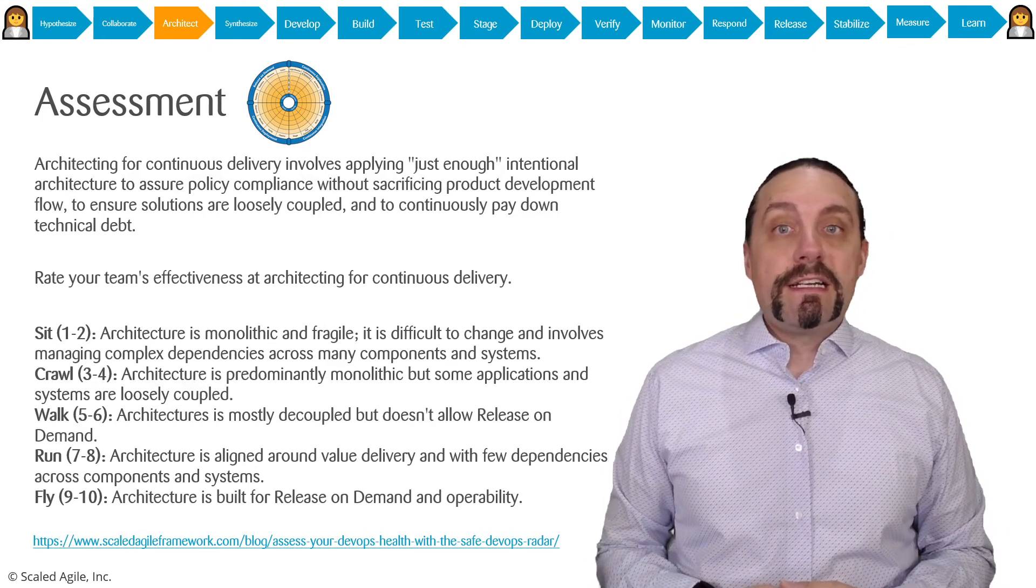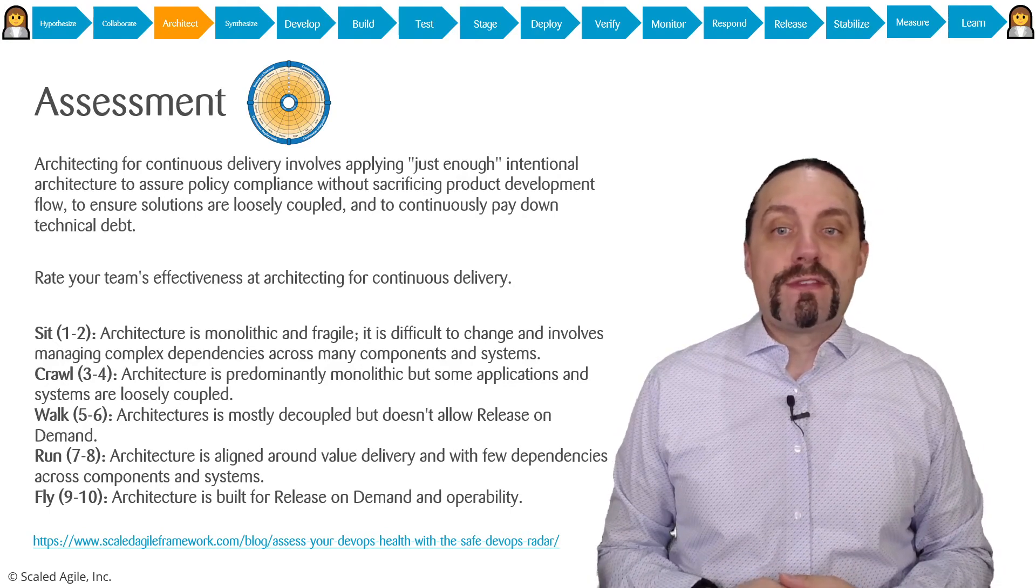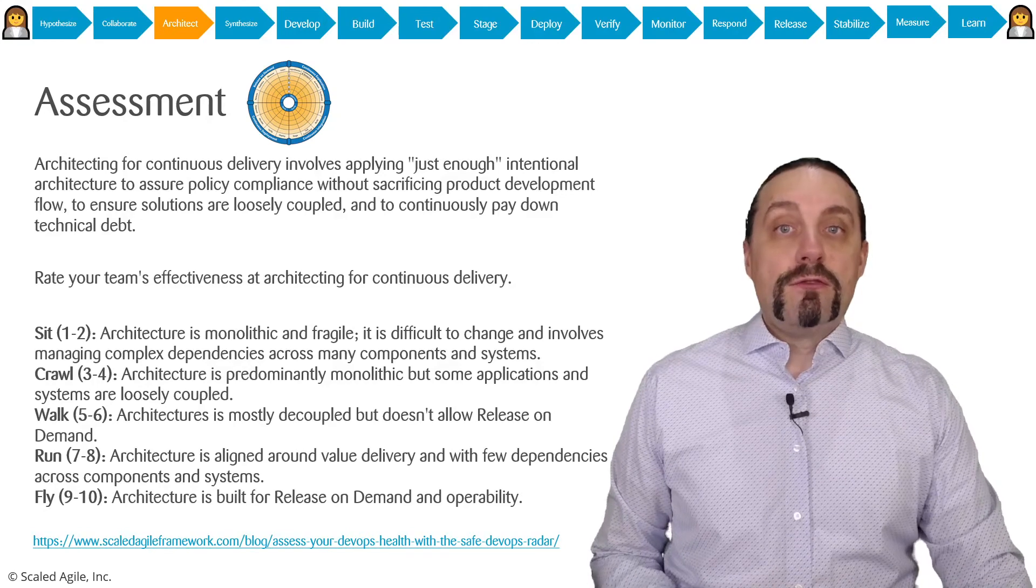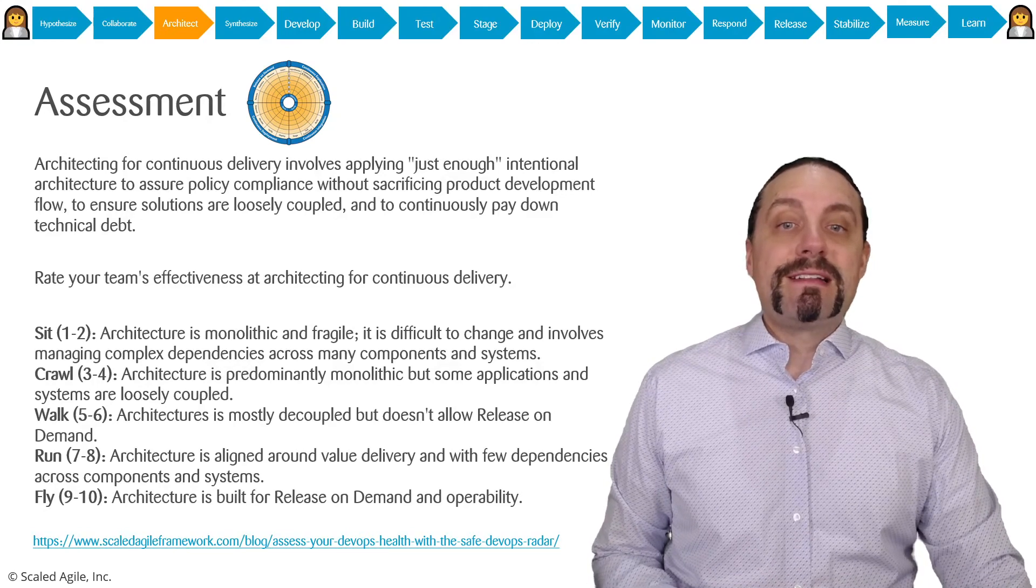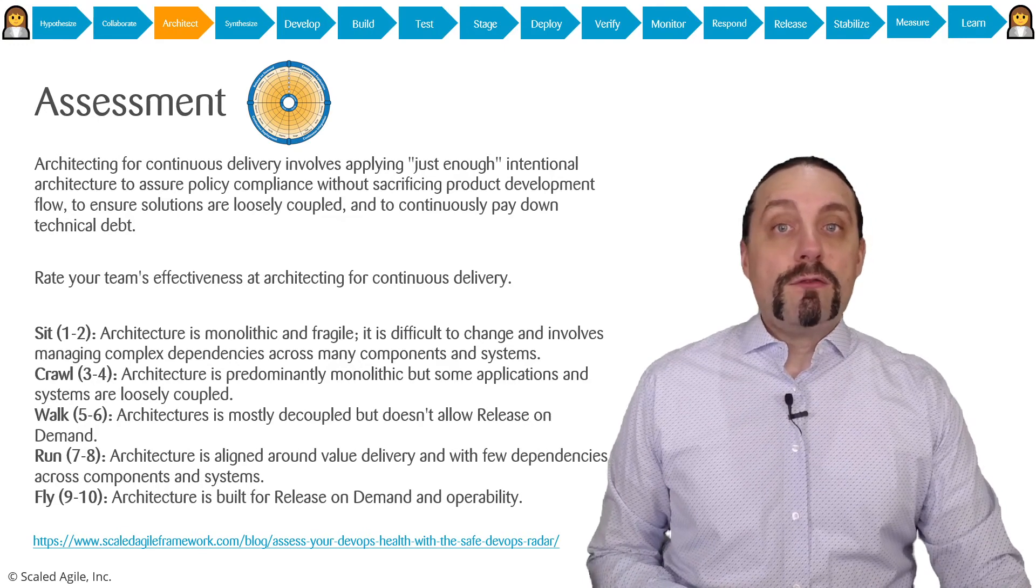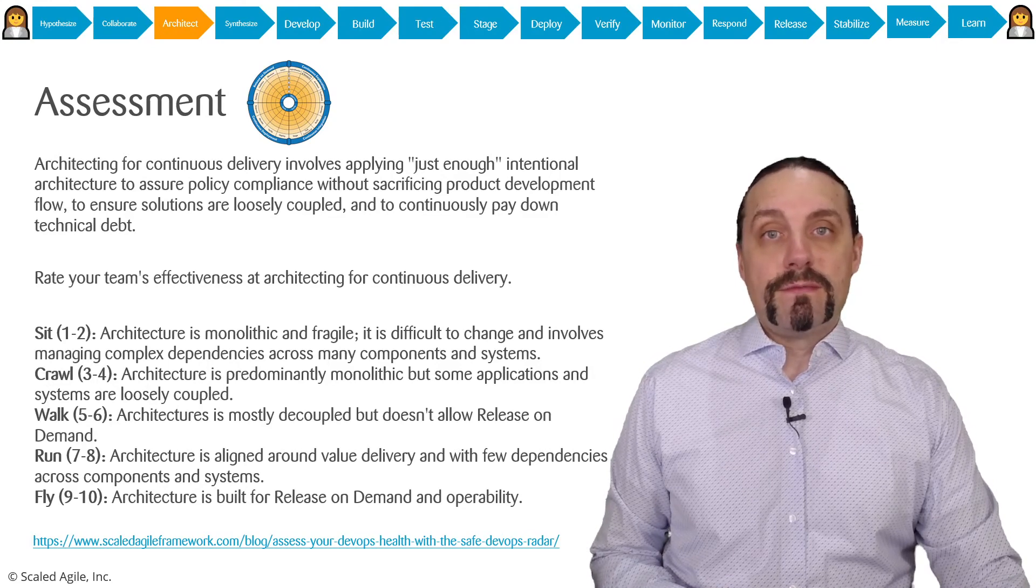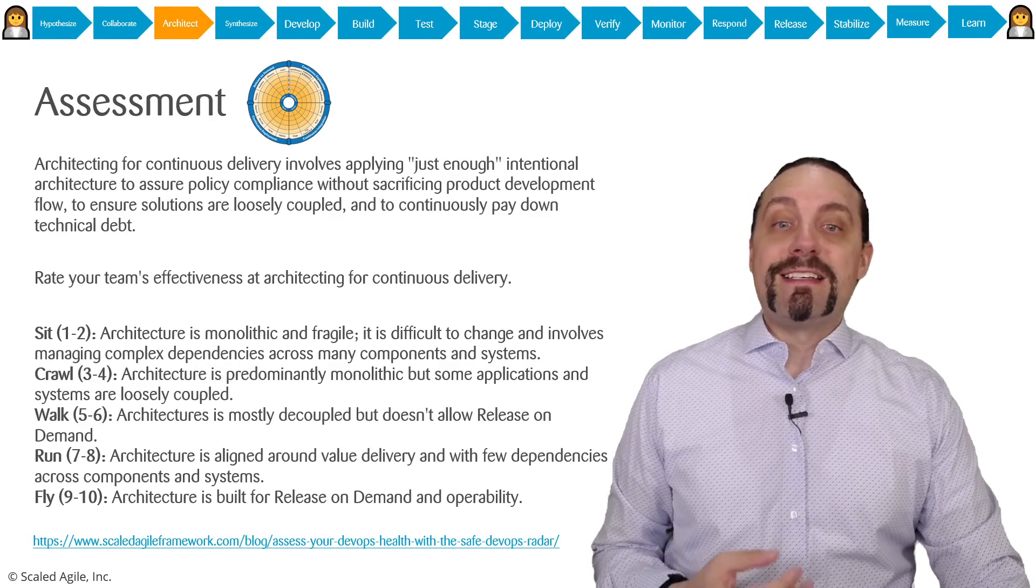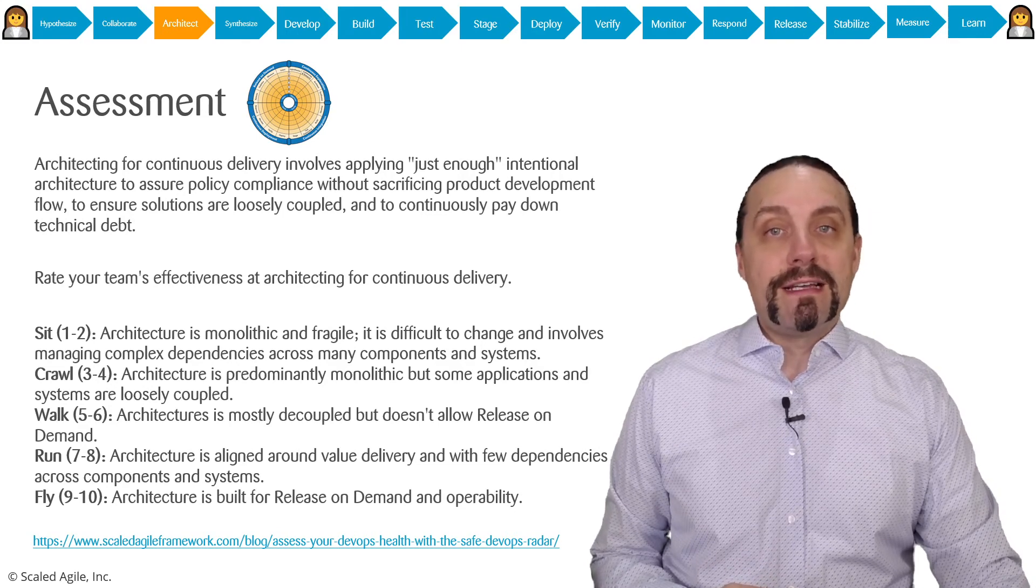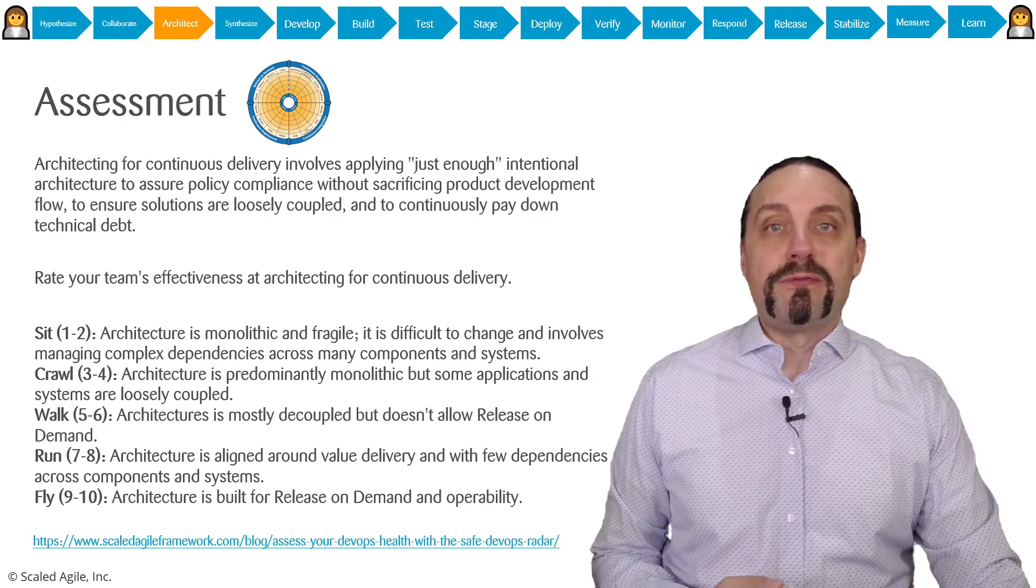You are sick when architecture is monolithic and fragile. It's difficult to change and involves managing complex dependencies. You are crawl when architecture is predominantly monolithic but some applications or systems are loosely coupled. You are walk when architecture is mostly decoupled but doesn't allow release on demand. You are run when architecture is aligned around value delivery with few dependencies. And you are fly when architecture is built for release on demand and operability.